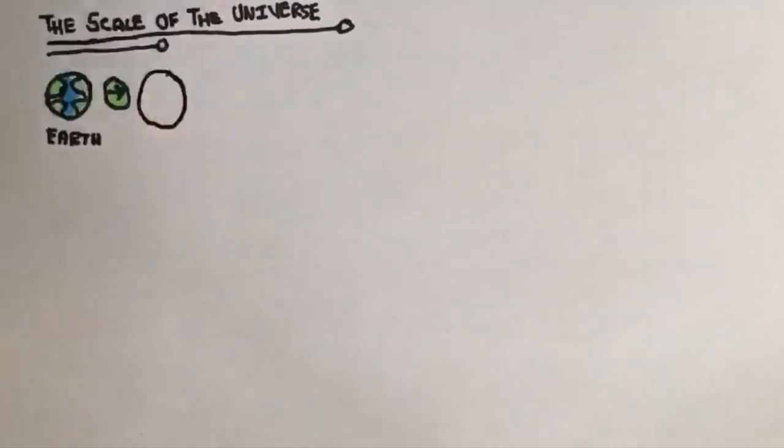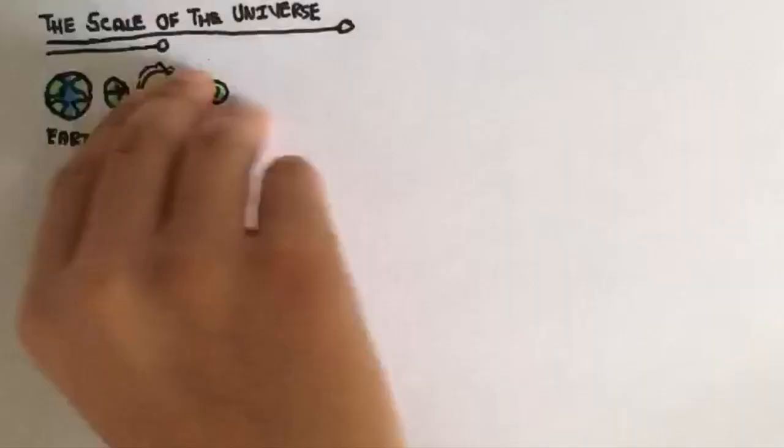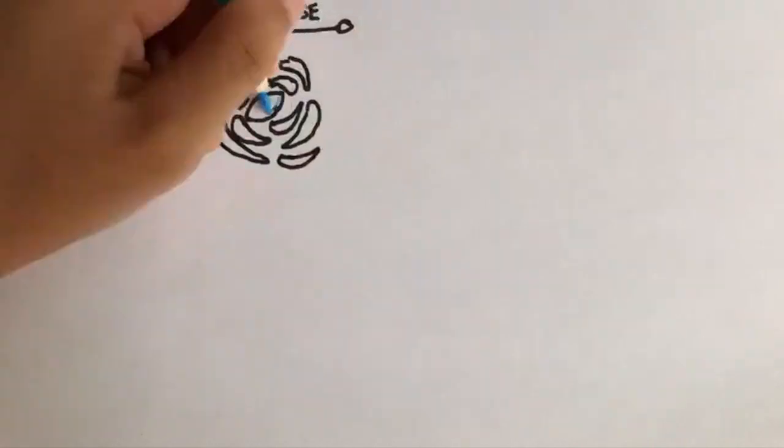The small mud ball we live on is orbiting an average star that is located in an average location of a galaxy that has 100 billion stars.